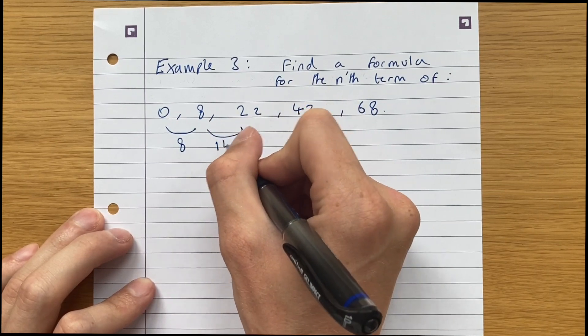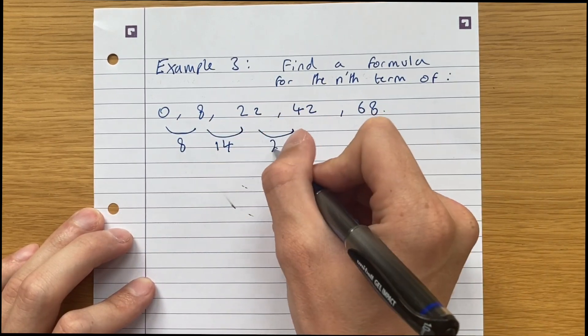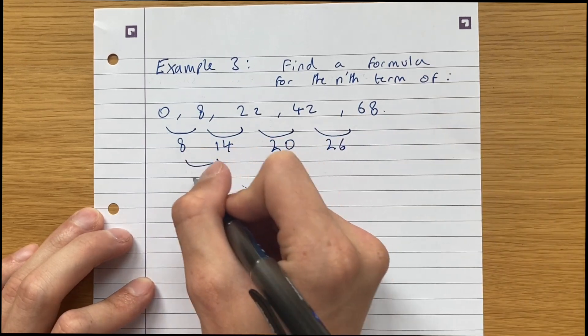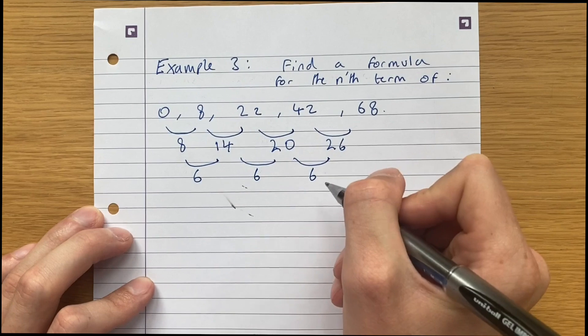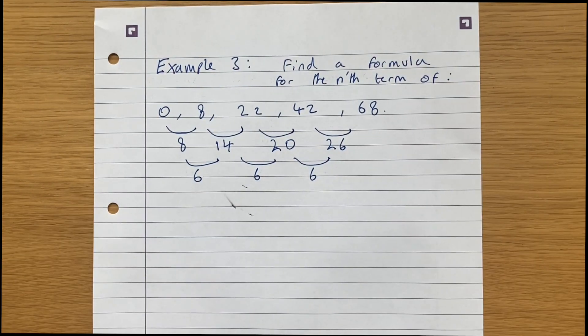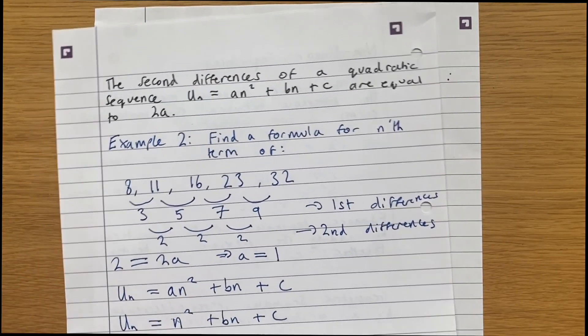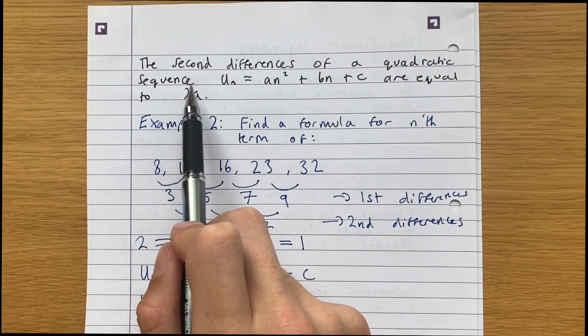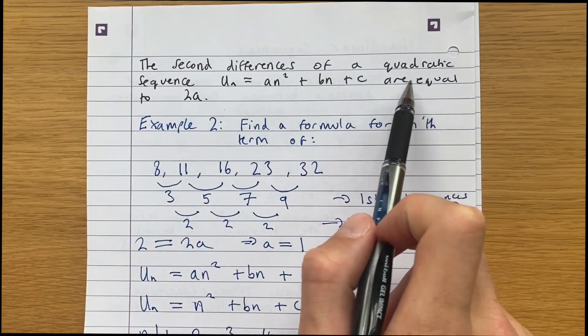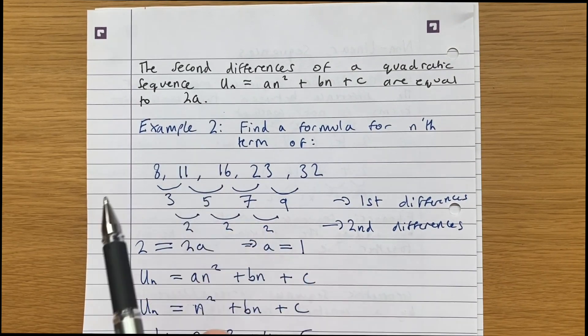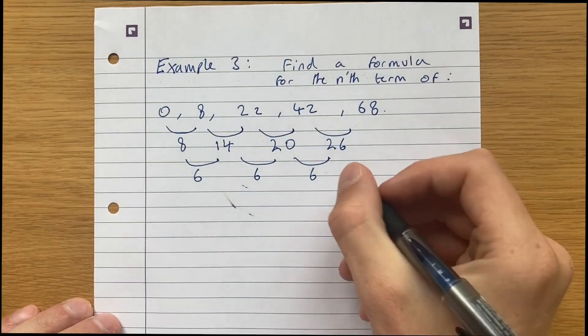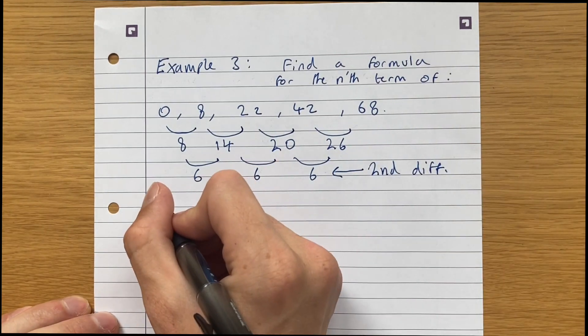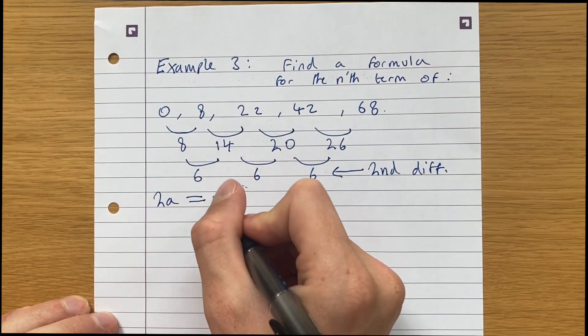So 8, 14, 20, 26, the second differences being 6, 6, 6. And if we just remember our important fact, the second differences of a quadratic sequence, un equals an squared plus bn plus c, are equal to 2 times a. In other words, our second differences are equal to 2a. So 2a is equal to 6, so a must be 3.